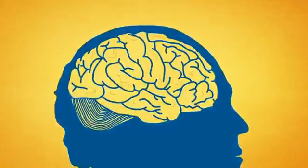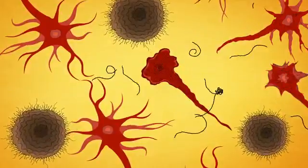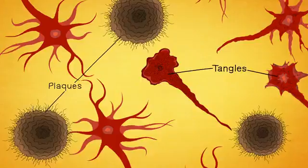The disease comes on gradually as two abnormal protein fragments, called plaques and tangles, accumulate in the brain and kill brain cells.